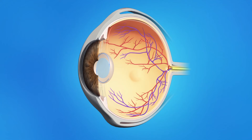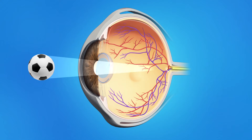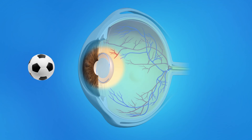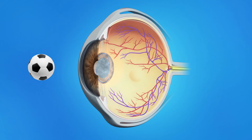The artificial lens implanted in your eye during cataract surgery is clear, allowing light rays to pass through and focus precisely on the retina. Eventually, however, the capsule holding the IOL can become cloudy.